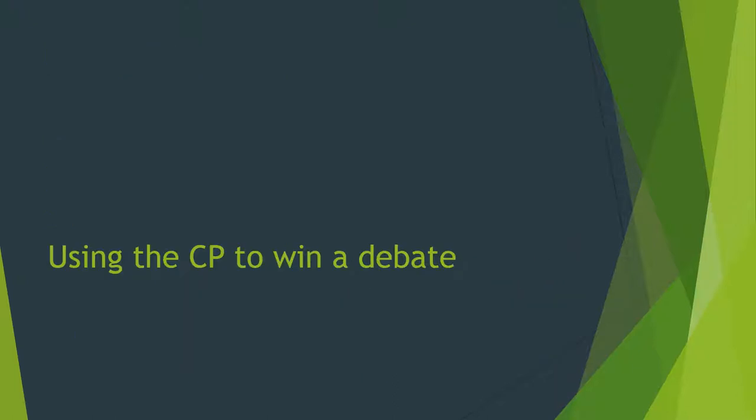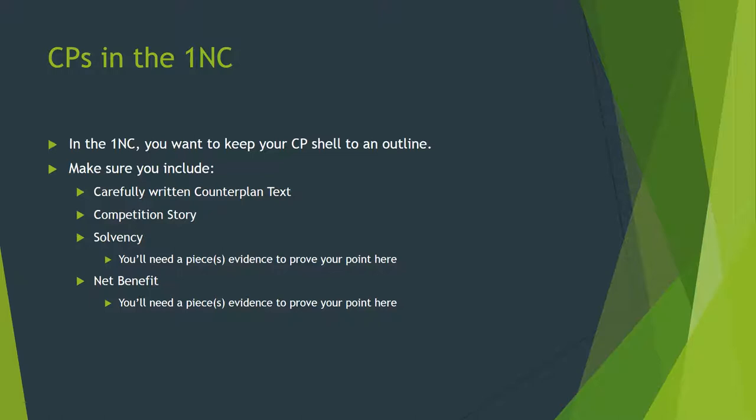So now that we've walked through some of the basic components of a counter plan, how do you use one to win a debate? In the first negative constructive, keep your counter plan shelved to an outline. Make sure to include: a carefully written counter plan text responsive to the specific affirmative you're debating; a competition story explaining why the counter plan and the plan are mutually exclusive and identifying the key differences; solvency — how does the counter plan work and how does it solve the affirmative; and lastly, the net benefit — why is the counter plan better than the plan? Be sure to clearly identify what arguments make the counter plan net beneficial and point them out directly to the judge.